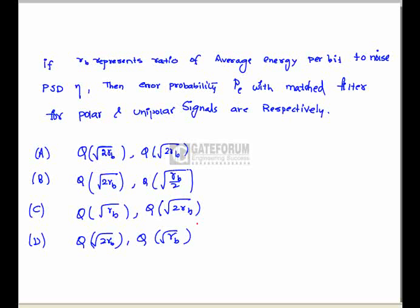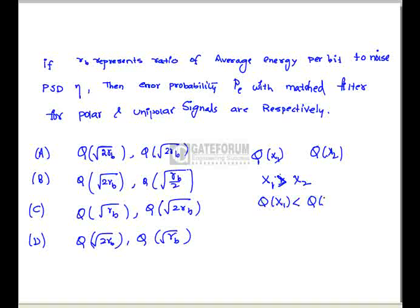If r b represents a ratio of average energy per bit to noise p rc then error probability pe with match the filter for polar and unipolar signals are respective. We know that q of x if x is higher, q of x1 versus q of x2. x1 is greater than x2 means q of x1 is less than q of x2. Here we know that noise effect on unipolar signals is less than the noise effect on the polar signals. Hence option d is correct.